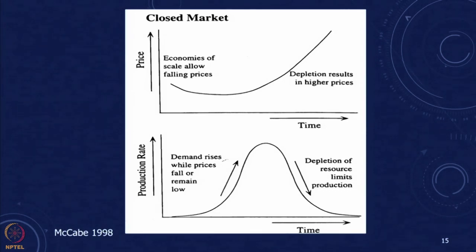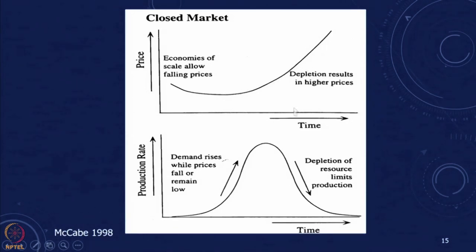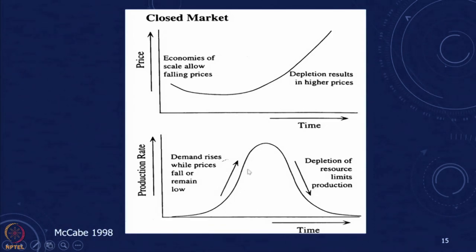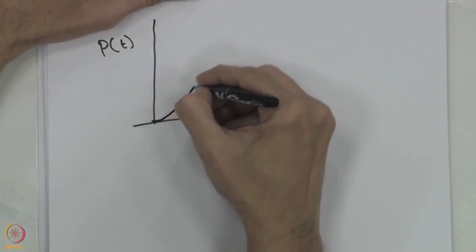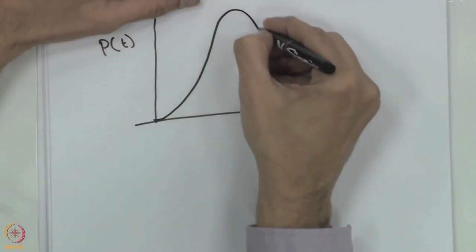In Maqeb's paper, he talks about two different models of any resource. In a closed market, because of economies of scale, prices can initially go down, then depletion results in higher prices. As prices fall, demand rises, and as depletion continues, the production rate goes down. We expect a curve which will go through a maximum and come down — a bell-shaped curve of P(t) versus t, starting from zero, going to a maximum, and coming down. Similar behavior is expected even in an open market.